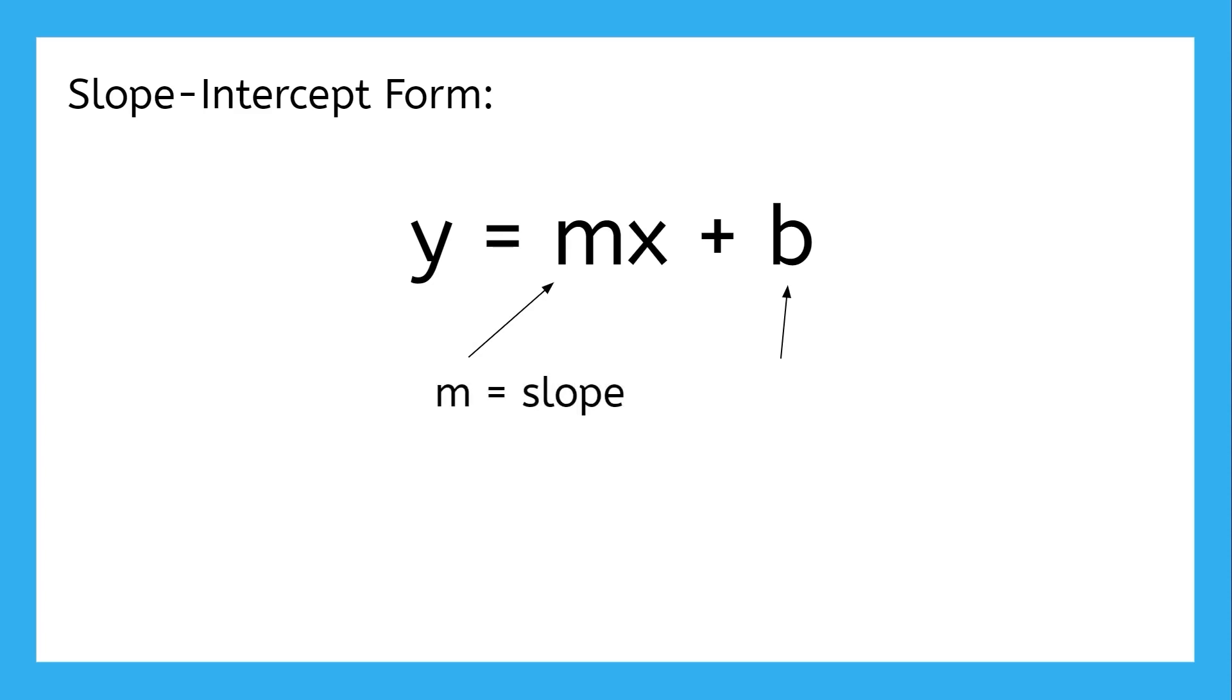m, that value multiplying the x, is the slope, and b, the value being added, is the y-intercept.